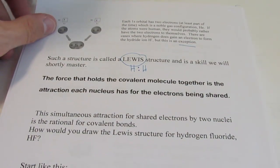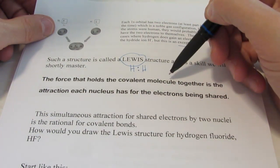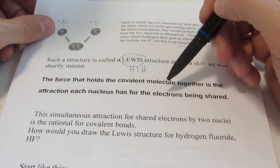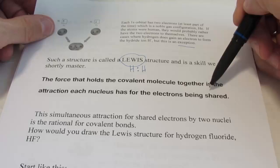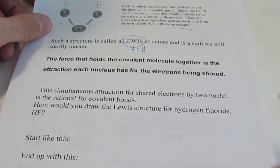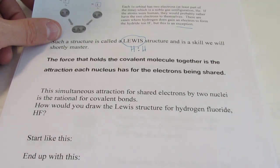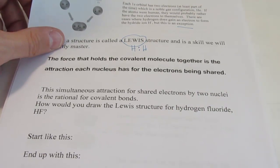If the atoms were human, they would probably rather have the two electrons to themselves. In fact, there are cases where hydrogen does gain an electron to form the H- ion, but that is an exception.